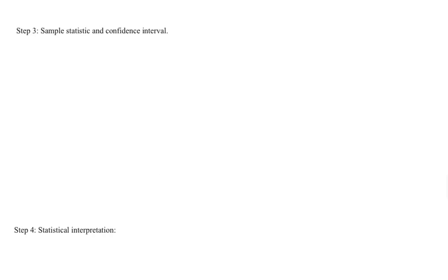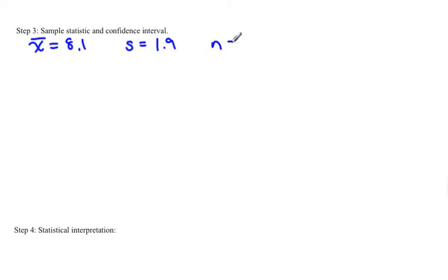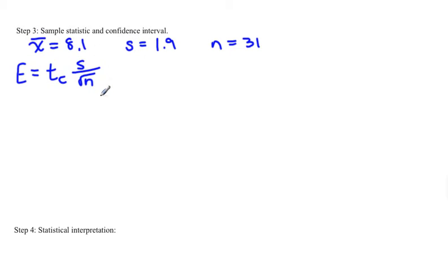Now we can move on to the third step: come up with your sample statistic and your confidence interval. They told us the sample mean x-bar is 8.1, the sample standard deviation s is 1.9, and the sample size n is 31. The only other thing we need is to find e, the error. e equals t sub c times the standard deviation over the square root of n. The standard deviation over the square root of n is the standard error of the estimate.